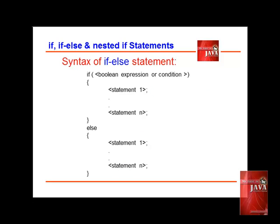How about if you want to execute statements when the condition becomes false? We use another variation: the if-else statement. This is the following syntax. Once the condition is not satisfied, which is false, the program will branch immediately to the statement underneath the else statement. Note that the statements are also enclosed with curly braces to show the block of statements to be executed when the condition is set to false.